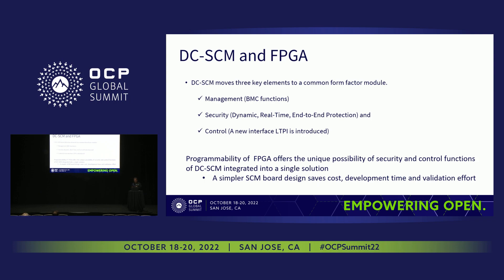If you look at NIST compliance and Intel PFR compliance — PFR 2.0, 3.0, 4.0 — they're saying that for security hardware root of trust, mostly for pre-boot and post-boot conditions, you need an FPGA, because the programmability of the FPGA can give you the security functions. So we're trying to show that an FPGA can offer the possibility of security and internal control functions together — which is a simplification that will save costs, development time, and validation effort.